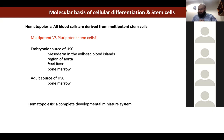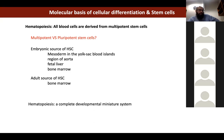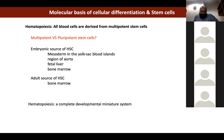Blood cells have different origins during embryonic life and in the adult. In early embryonic life they're derived from the mesoderm in the yolk sac blood islands, then in the region of the aorta. Later in fetal life they differentiated in the fetal liver, and eventually the major source of hematopoietic stem cells in adults is the bone marrow. This hematopoietic system constitutes a miniature developmental system and has been studied extensively, leading to many discoveries about how differentiation continues in mammalian cells.